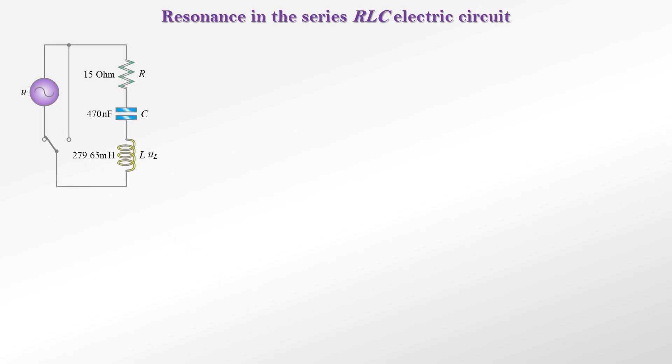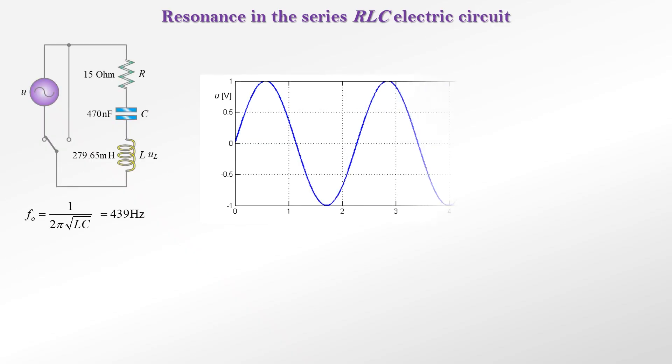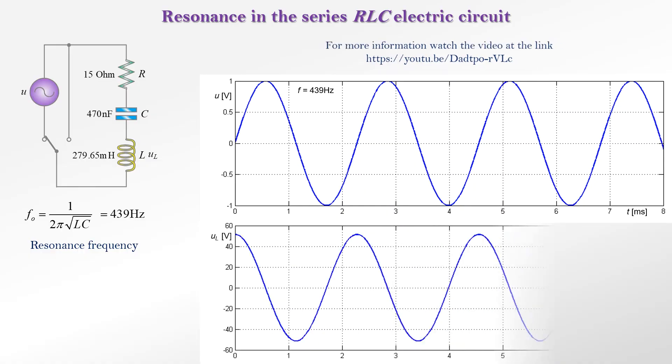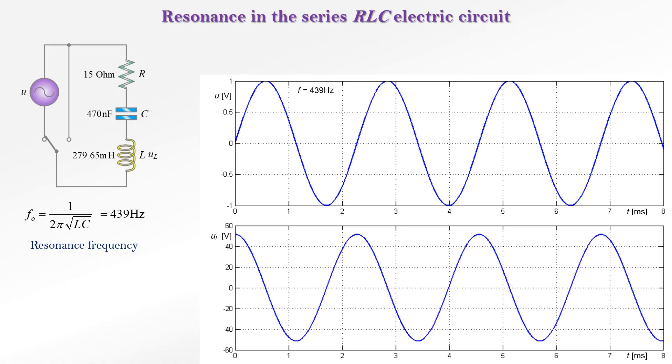The shown series RLC electric circuit is excited by a sinusoidal source. By selecting the source frequency at 439 Hertz, the circuit operates in resonance and the amplitude of the oscillations is maximum. The quality factor determines the magnitude of the overvoltage.